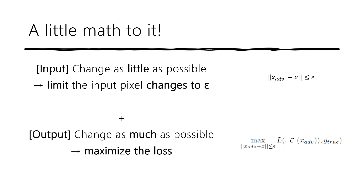Let's add a little math to it. x_adv, or x-adversarial, is the adversarial image, and the difference with the original image x should be within epsilon. Next, we want to maximize the loss of the output of the model with x_adv so that the output would be as far away as possible from y_true.